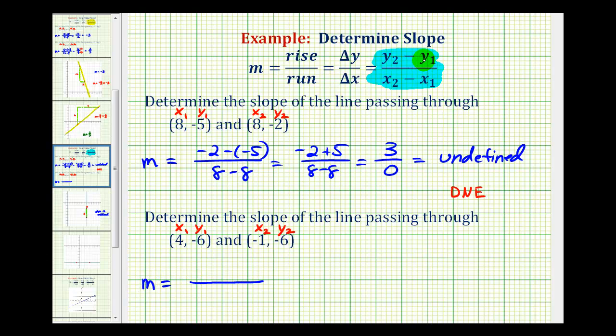We have y₂ minus y₁, that's going to be -6 minus -6, all over x₂ minus x₁, or -1 minus 4. This is going to end up being -6 plus 6 all over -1 minus 4, that's -5. But notice that -6 plus 6 is 0. Zero divided by -5 equals 0, so the line passing through these two points actually has a zero slope.